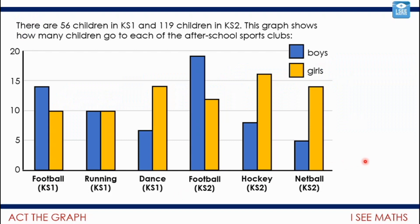So let's have a look at this one as an example. There are 56 children in the school in Key Stage 1 and 119 children in Key Stage 2. Here we've got a graph that shows how many children go to each of the after-school sports clubs. Now there could be questions asked about this graph. A one-step question is just a question where you only need to take one piece of information to be able to answer it. So let's say, for example, how many girls go to Key Stage 1 dance club? Then I would just need to look at this bar, read across hopefully accurately, and I've got a one-step question.